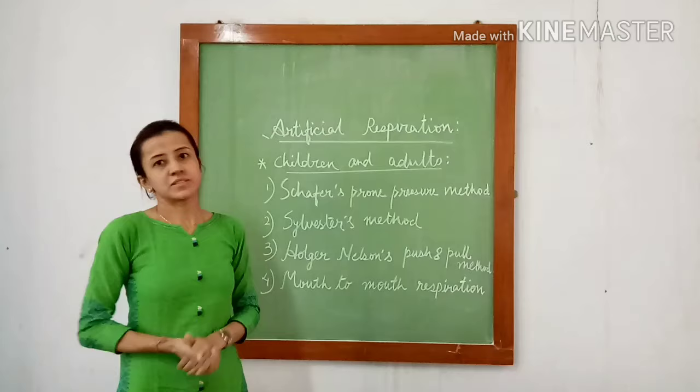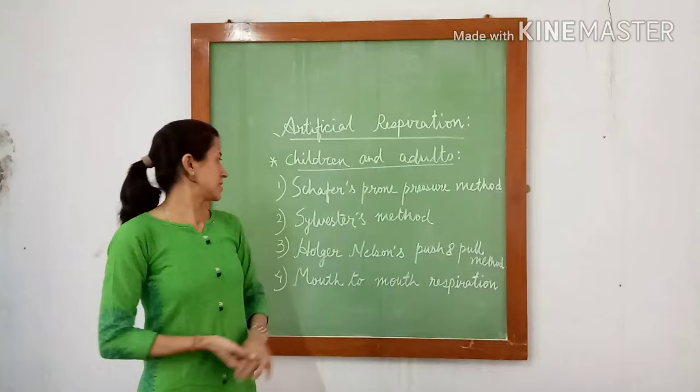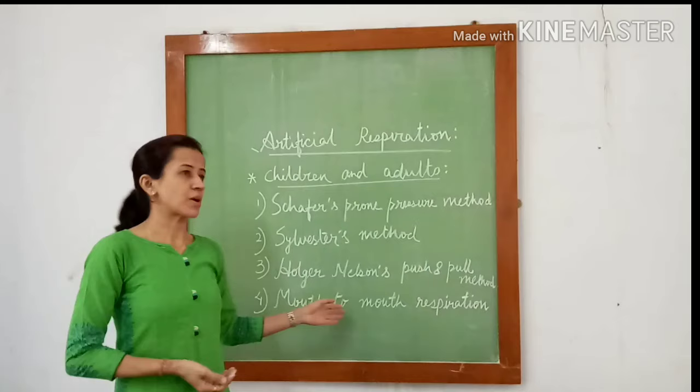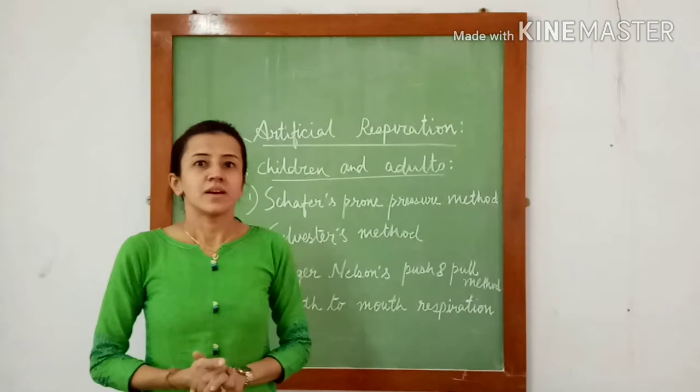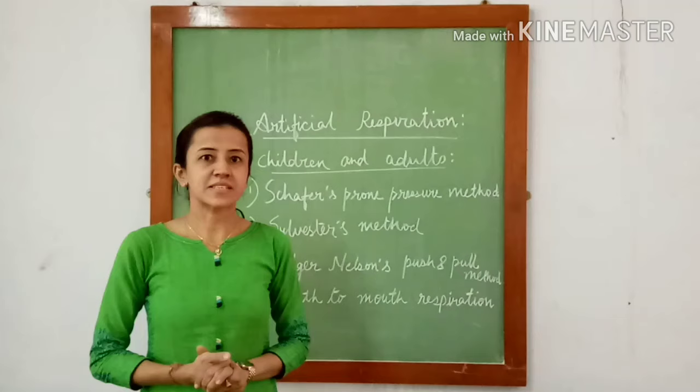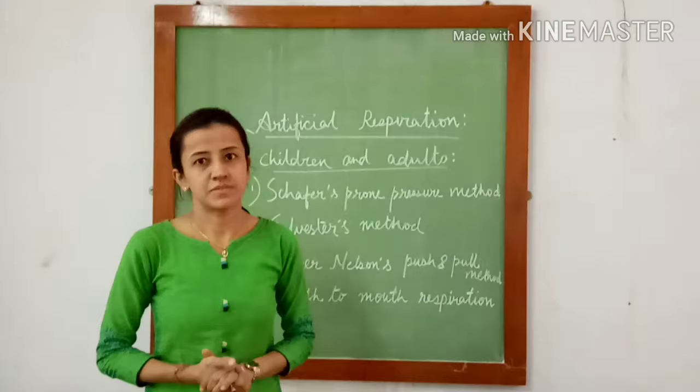Methods of artificial respiration in children and adults include the scaphous probe pressure method, Sylvester method, Holger Nelson push and pull method, and mouth to mouth respiration. In infants and newborn babies, we can perform mouth to mouth respiration, the Sylvester method, as well as pinching the skin and splashing hot and cold water alternately, which is also effective.